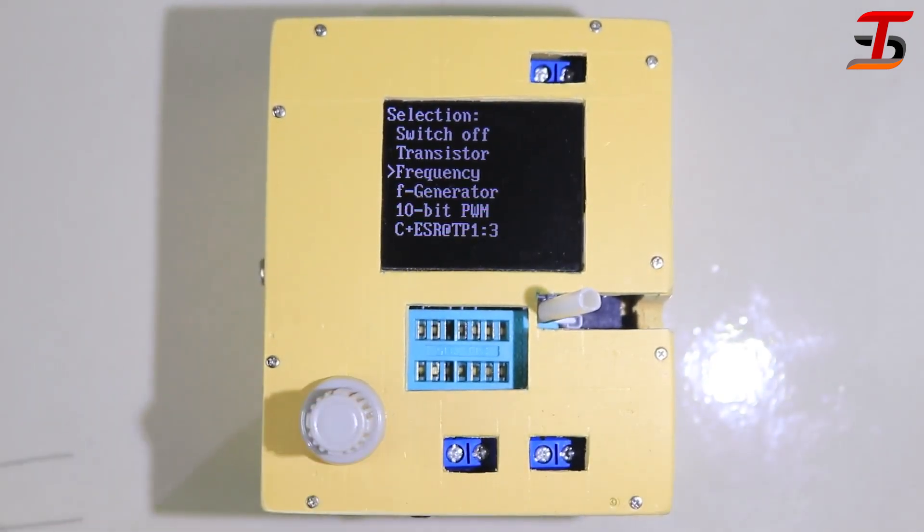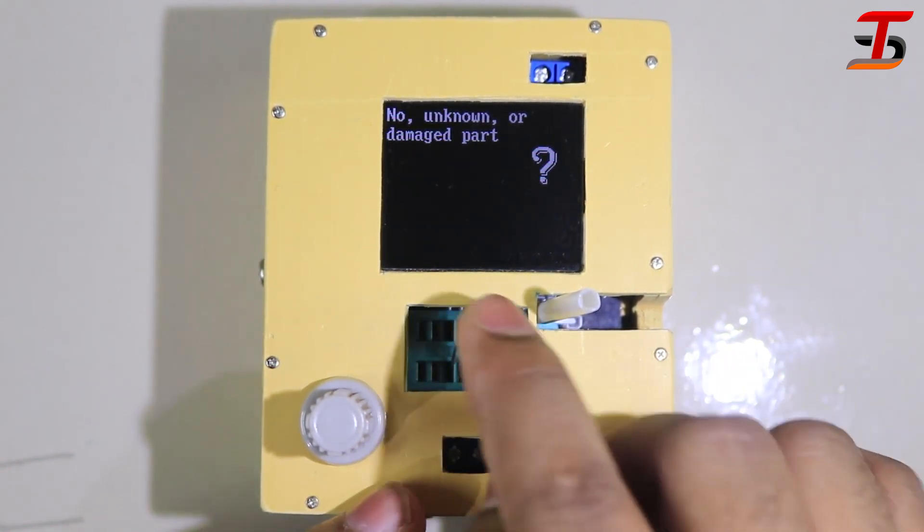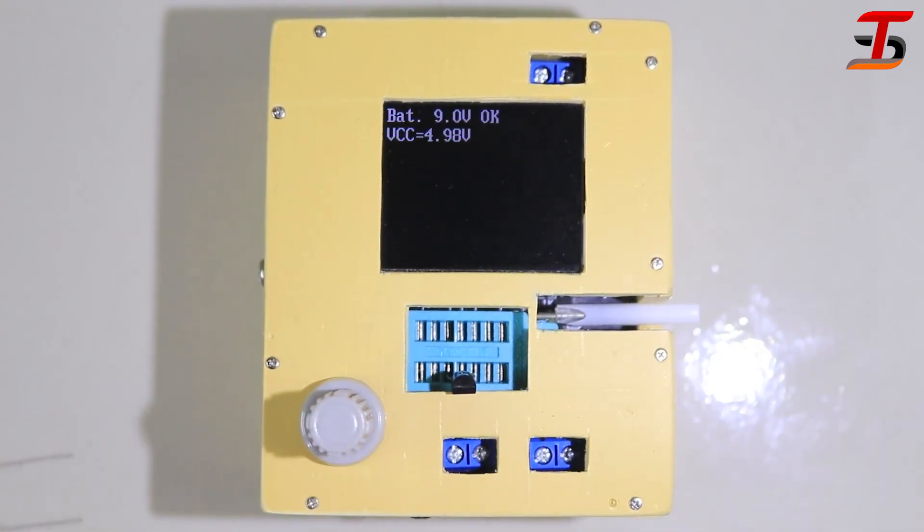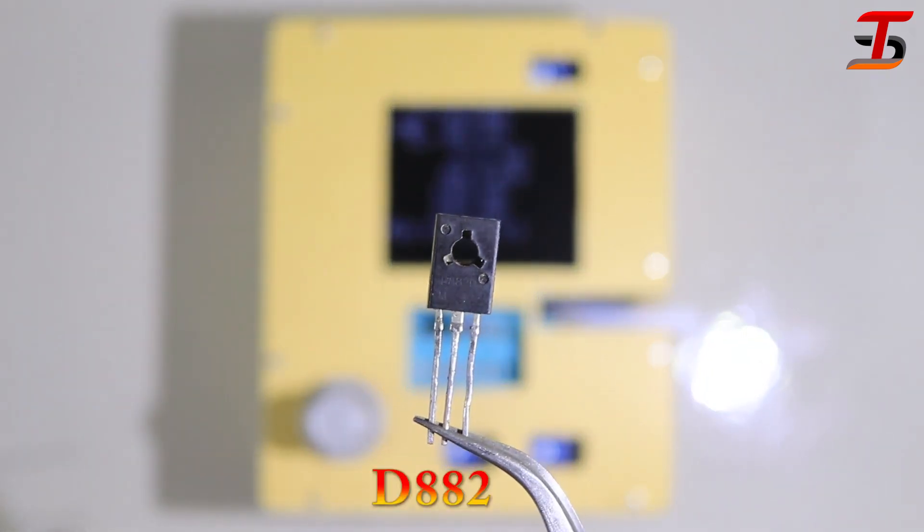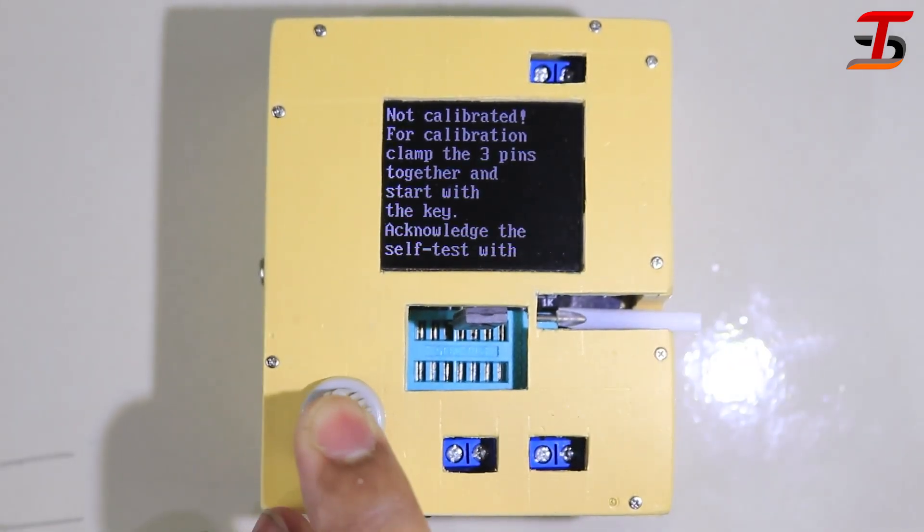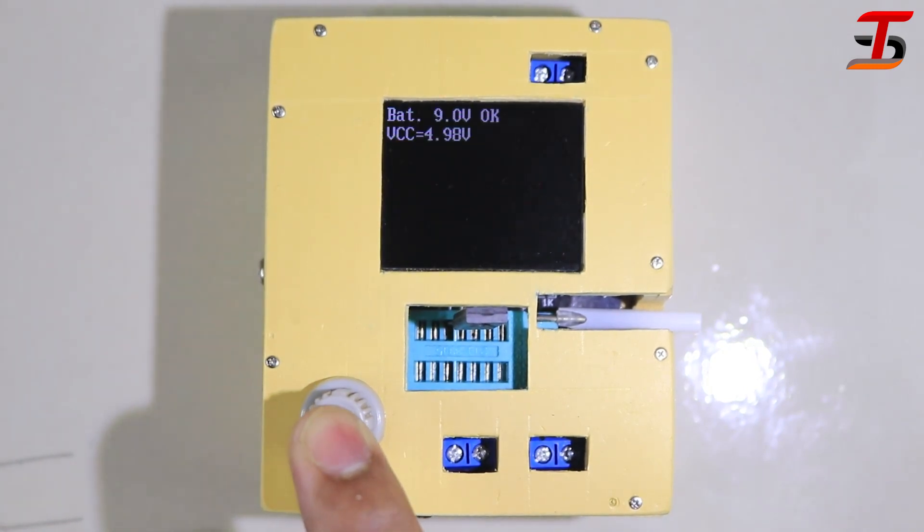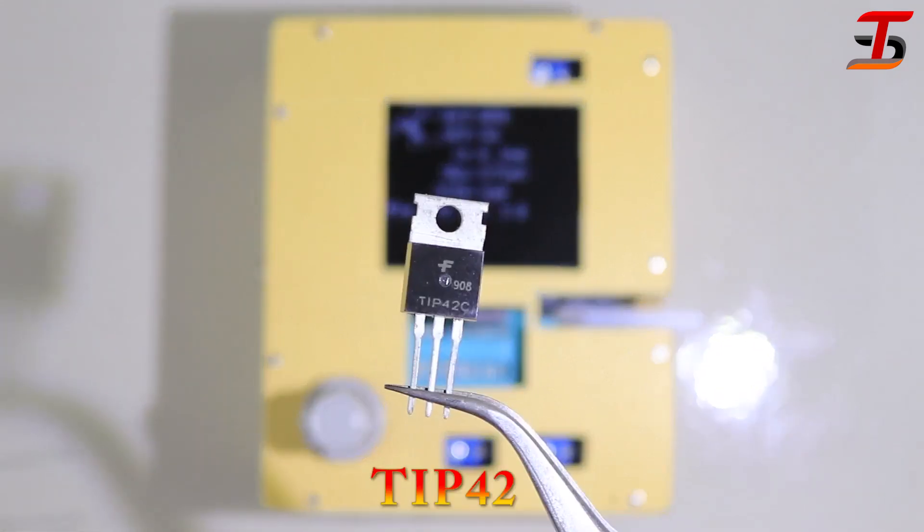For test transistor, I just select Transistor option. You can also measure all these components by auto. It's show the transistor pinout and diagram. It's D882. Now test it. Wow, it's show the pinout. Yeah, I love this device.